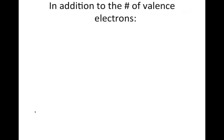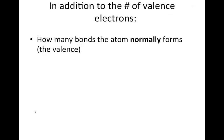Now you also have to know how many bonds the atom normally forms. That's called the valence, and for hydrogen it's one, boron three, carbon four. But nitrogen, the valence, or the number of bonds it normally forms is three, oxygen two, and fluorine and the rest of the halogens is one.